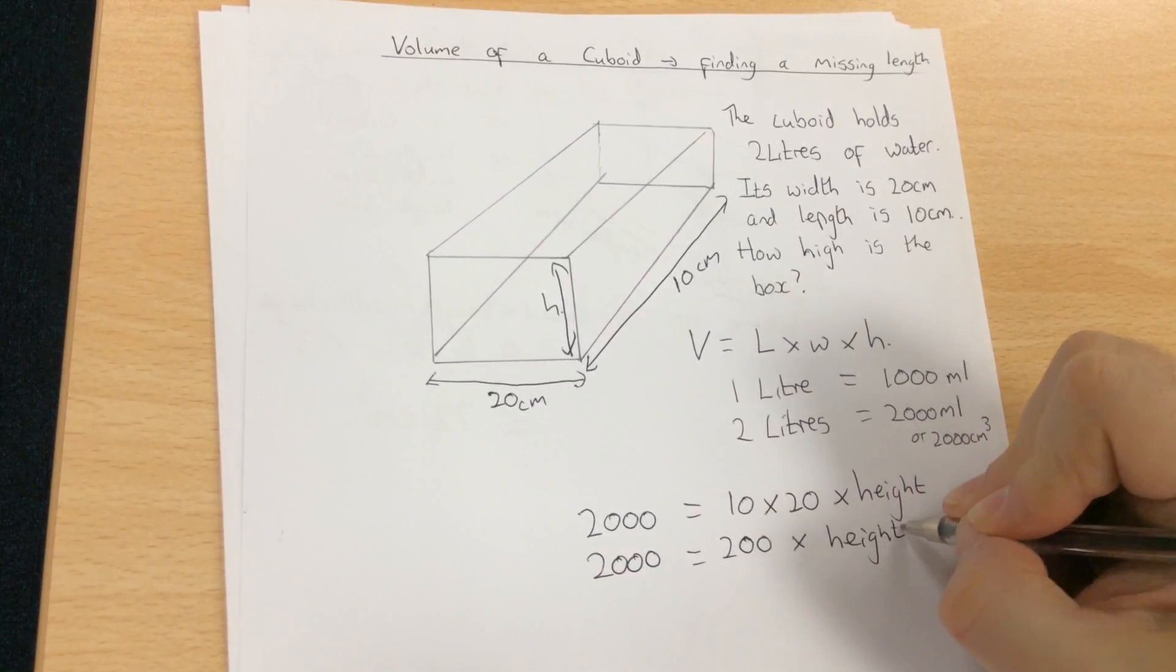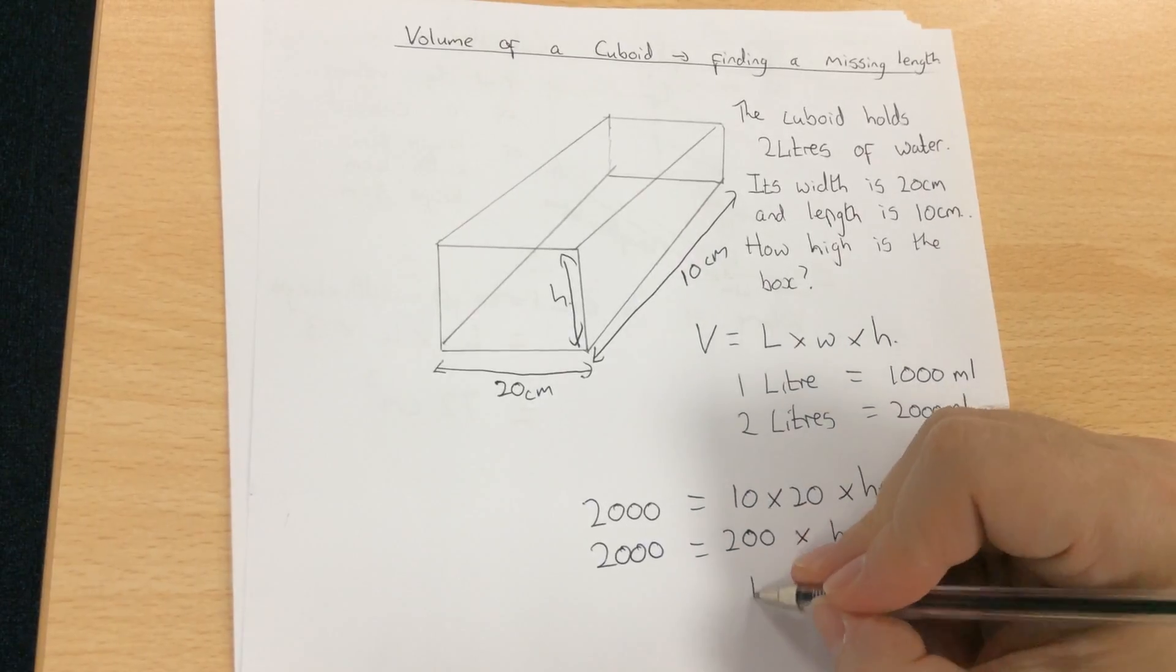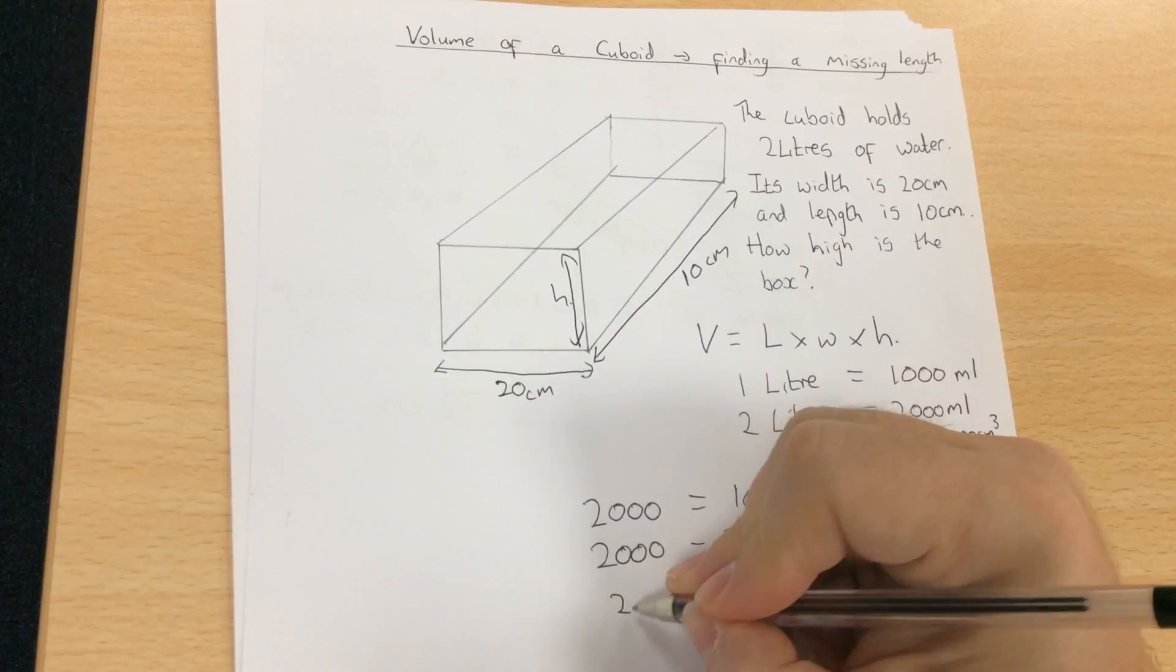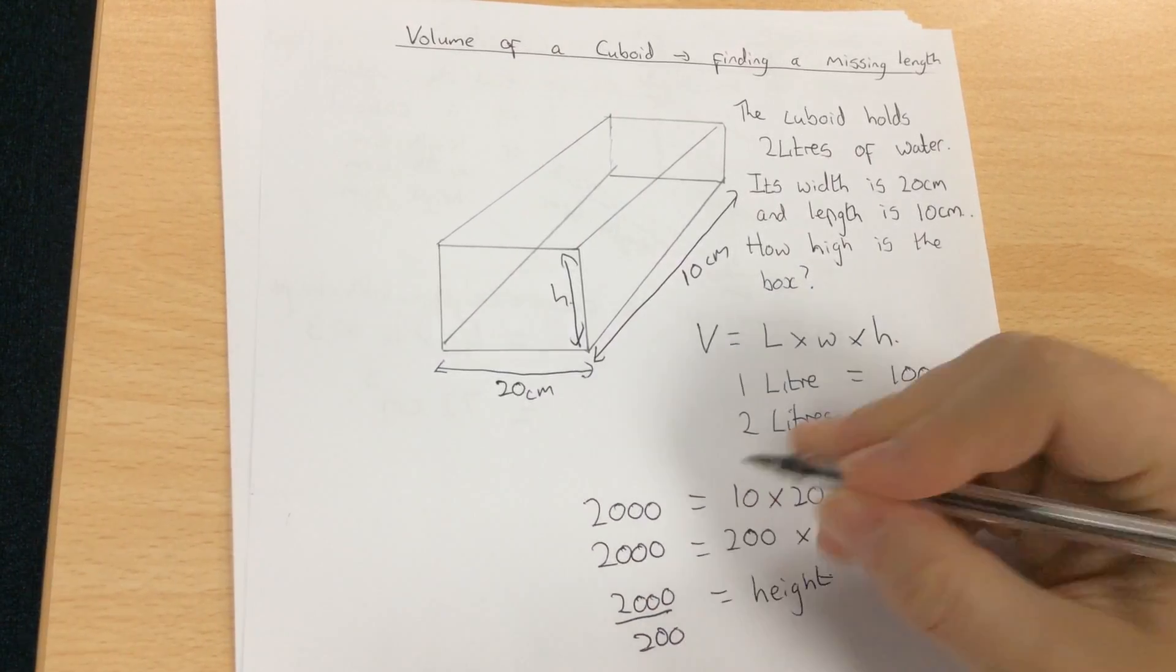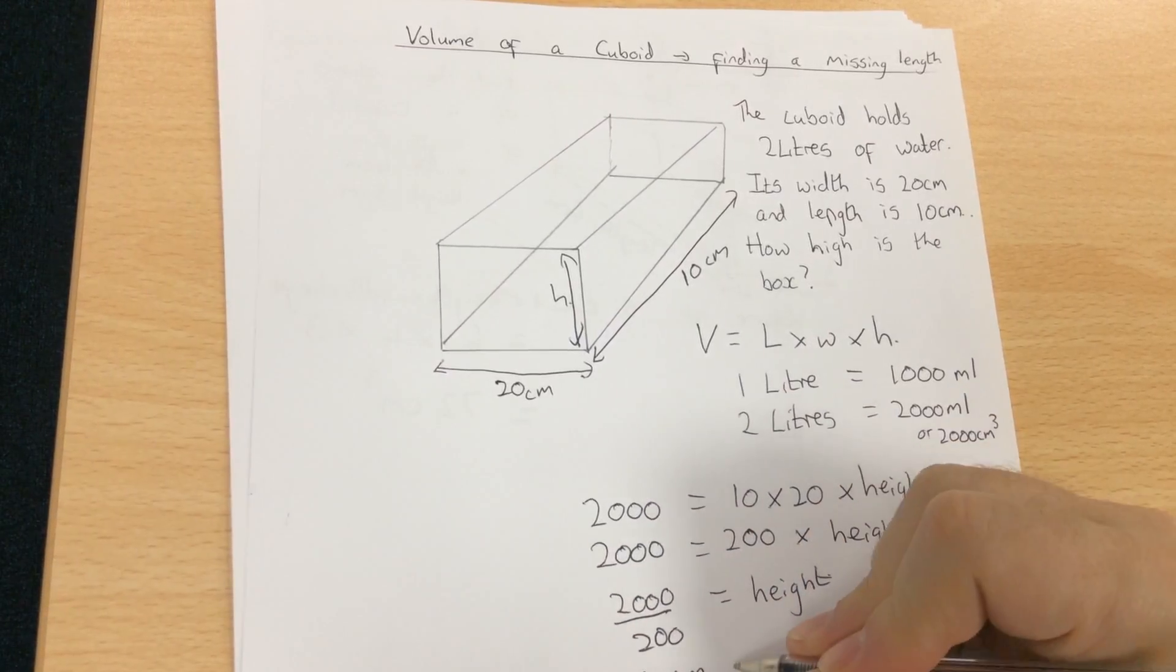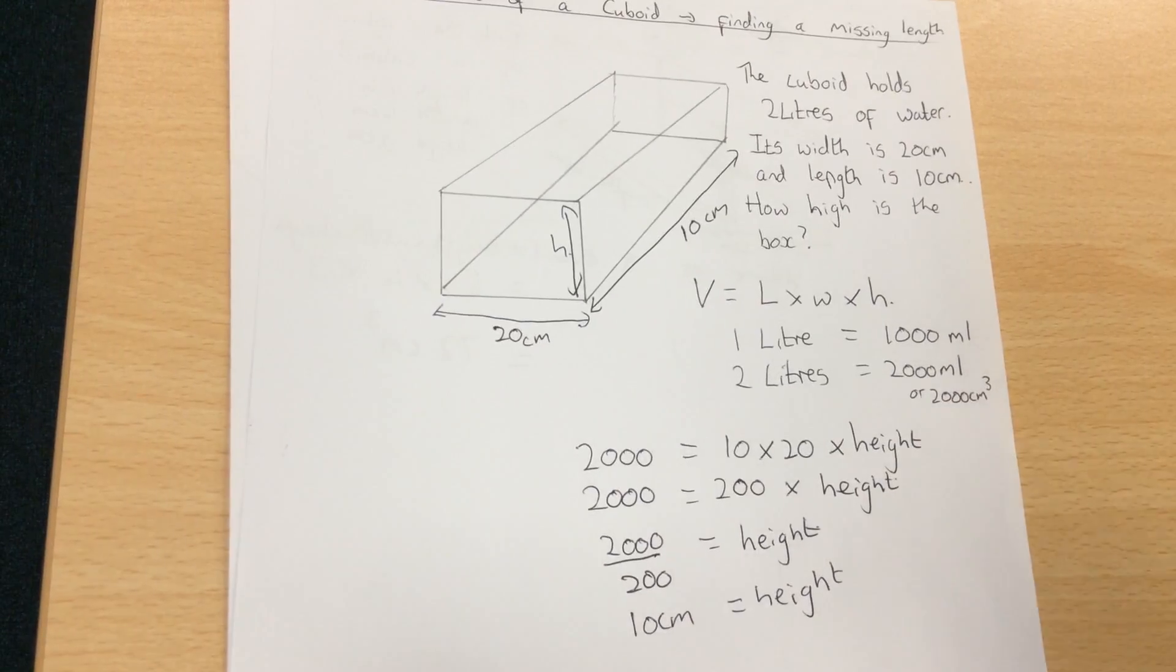Once I've got 200 times the height, to find what one of them is, it becomes divide. So it's 2000 divided by 200, and then 200 goes into 2000 ten times. So the height is 10 centimeters.